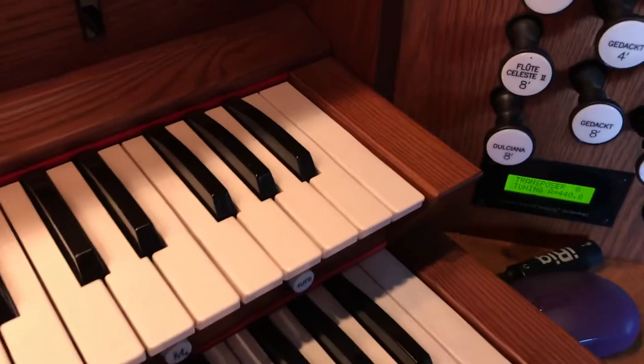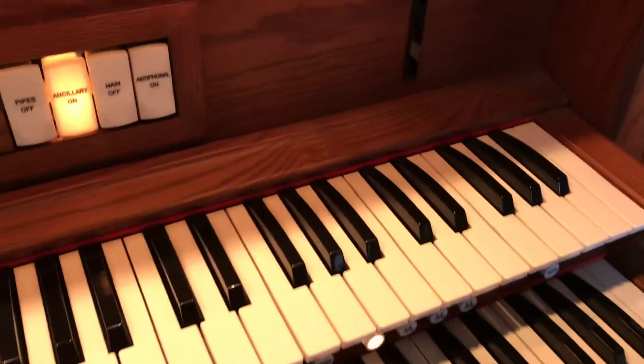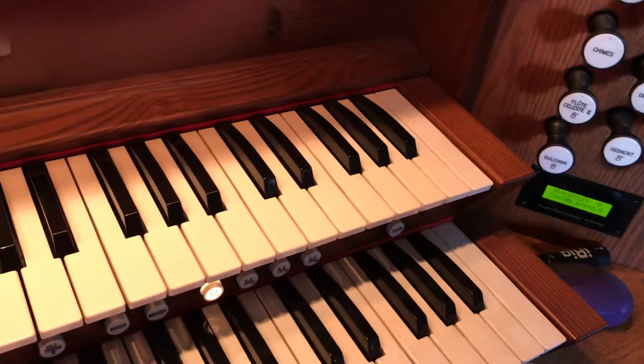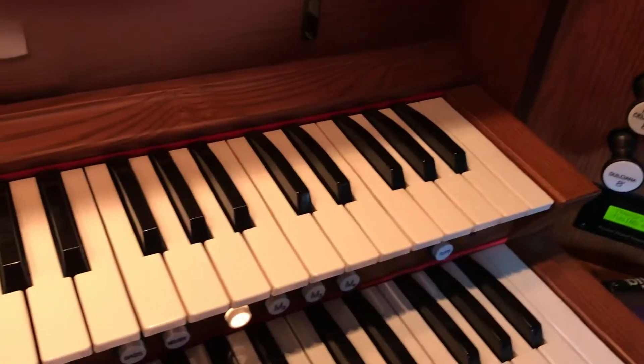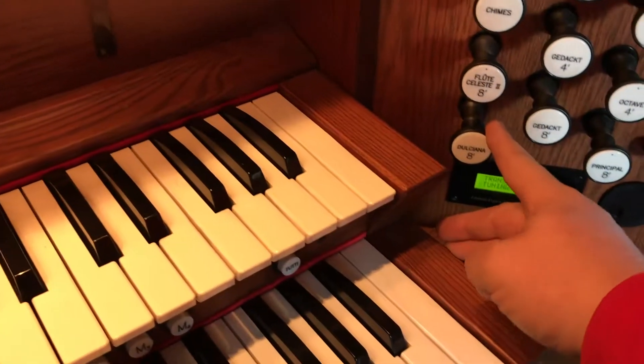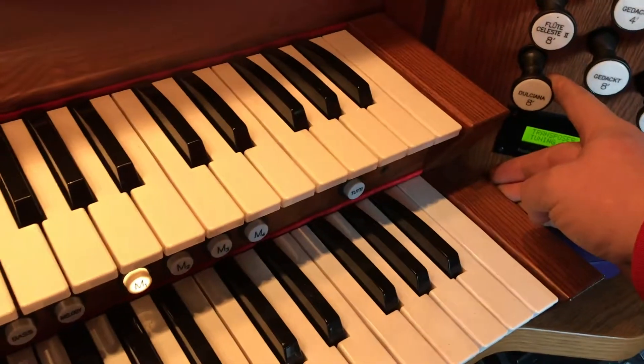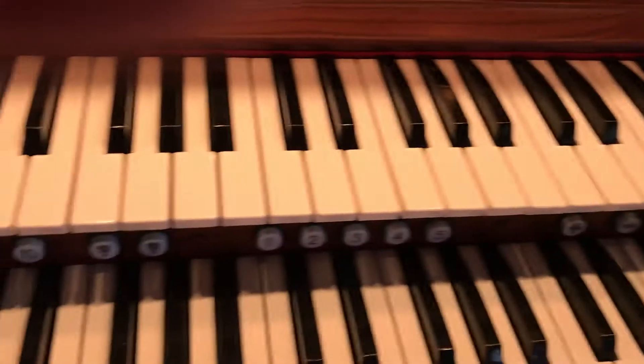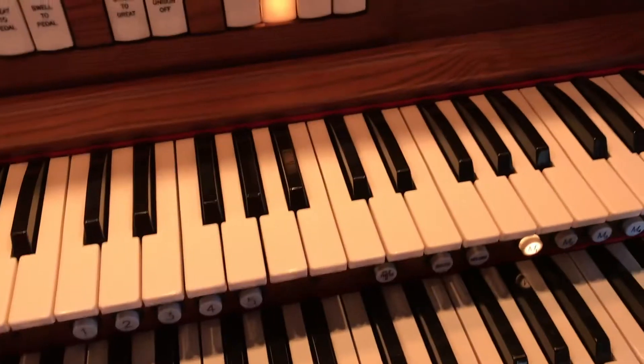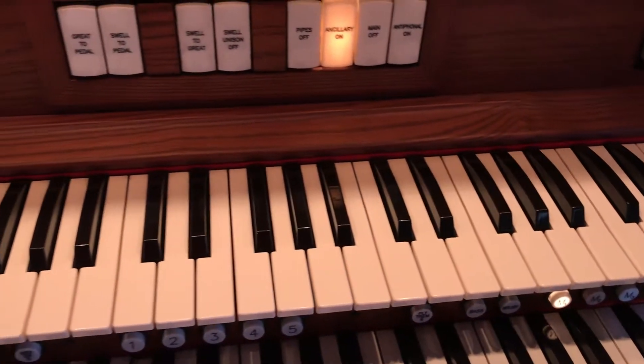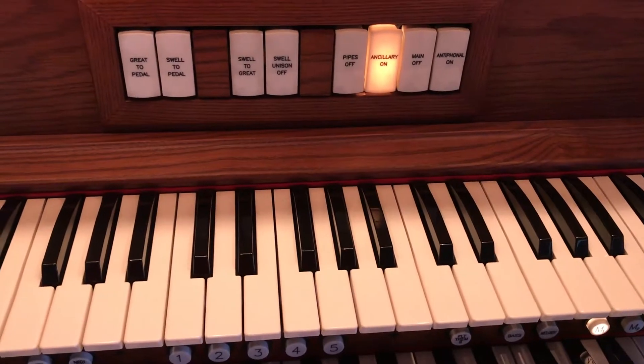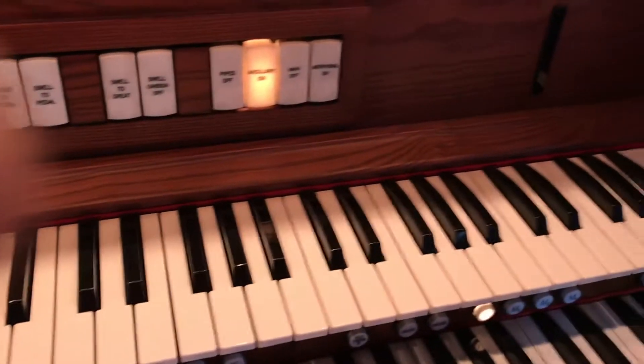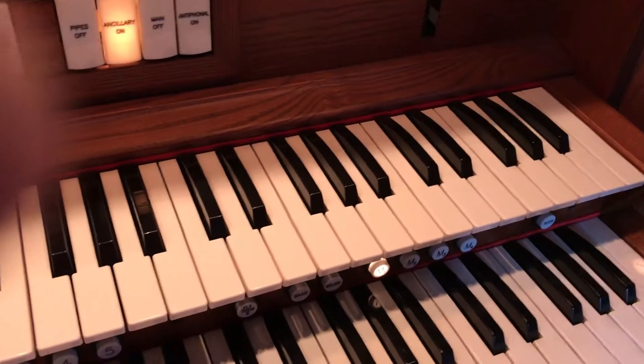And then we have strings. In an organ, you have a string family of tones. And those are usually imitative of different string sounds. But in this case, in the Great Division, we only really have one kind of a string type tone. It's a dulciana. It's very soft. It's an 8 foot pitch. And it creates a very soft, warm tone also.